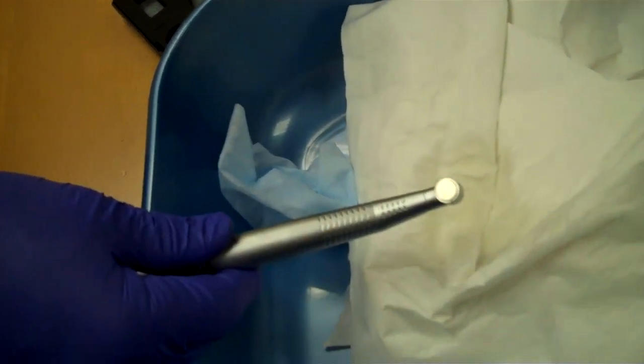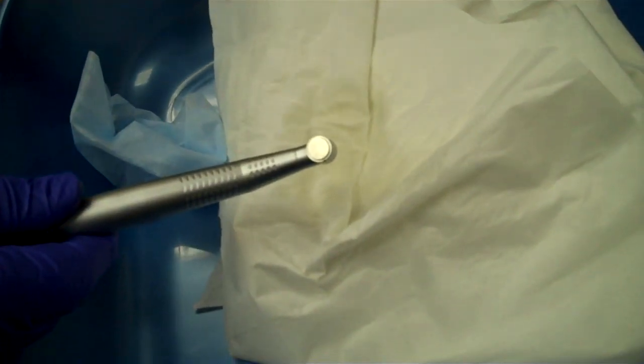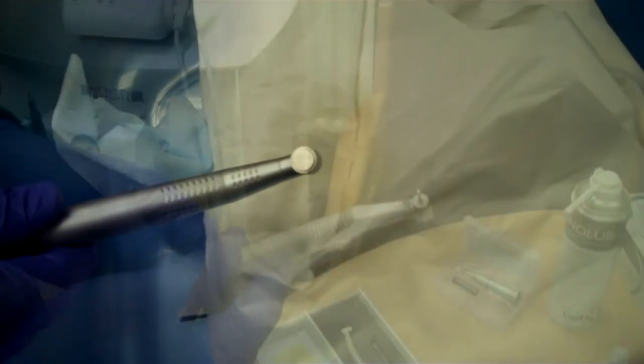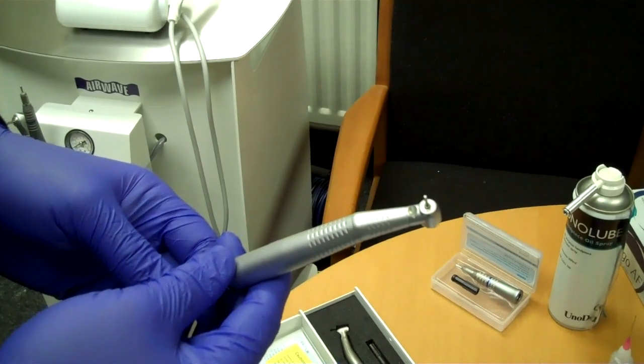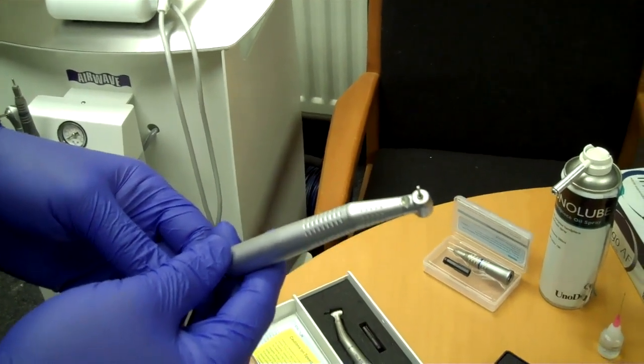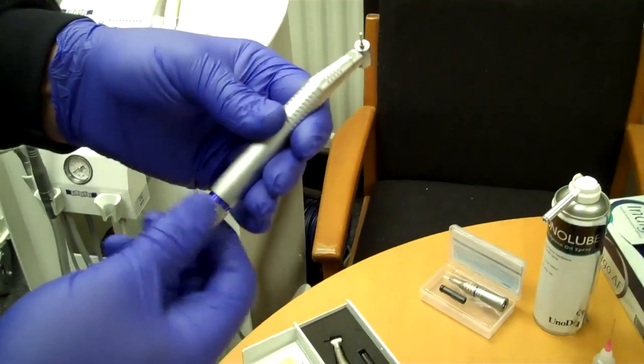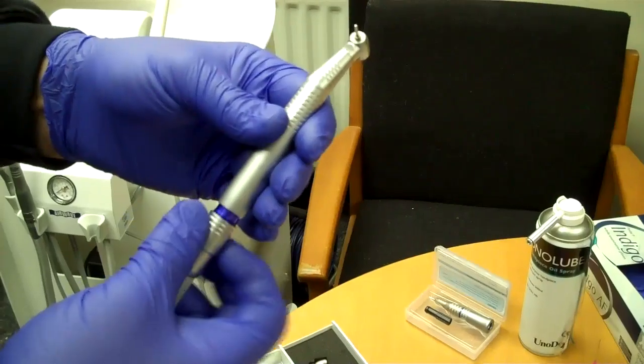If there's any excess oil, that will be purged out onto the tissue which we have here. Okay, this handpiece now has been purged, the oil has gone into the cartridge. We can now take this off the system again and bag it ready for autoclaving.